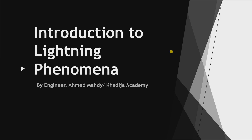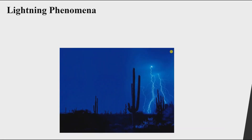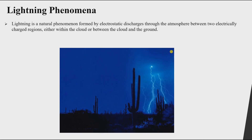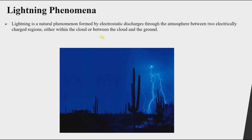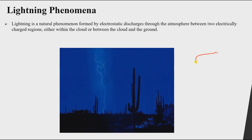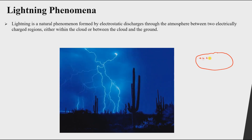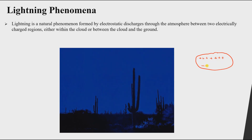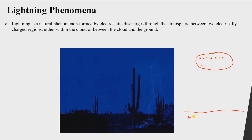In this first lesson we will have an introduction to understand more about lightning phenomena. Lightning is a natural phenomenon that occurs due to electrostatic discharges through the atmosphere between two charged regions. As shown in this figure, we have a cloud that can have positive charges and negative charges, and we have the ground below.